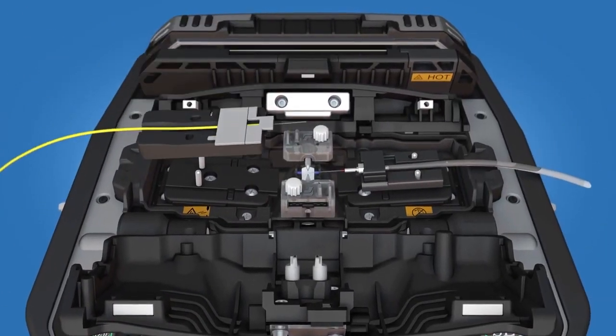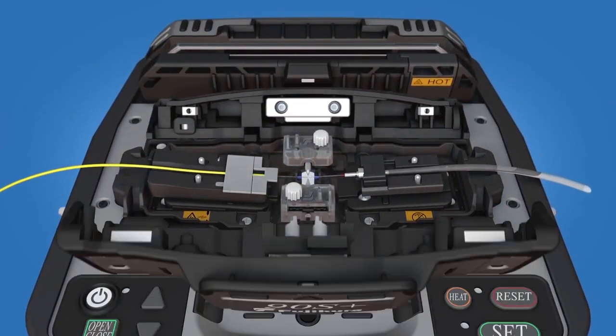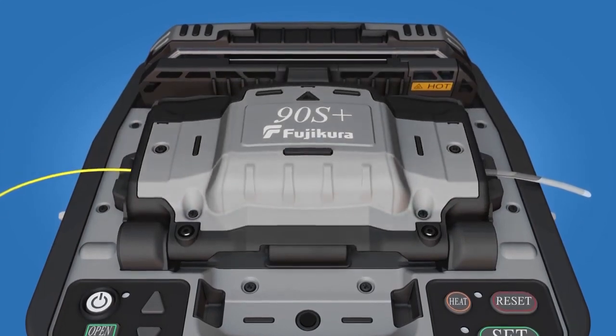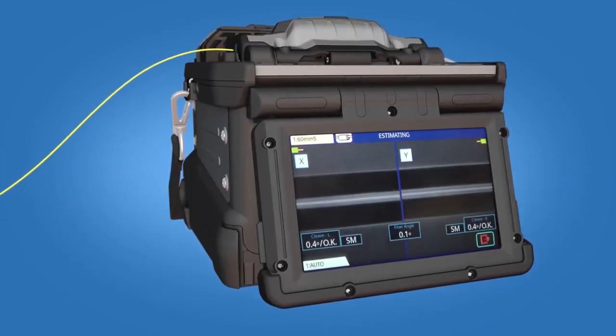Load the fiber holder into the left side of the Fusion Splicer and close the wind protector. Splice the fiber to the FuseConnect connector.